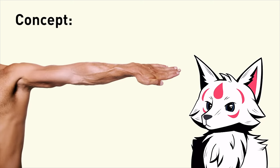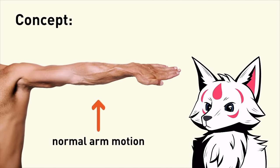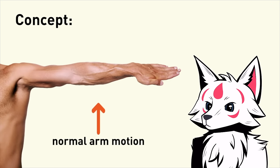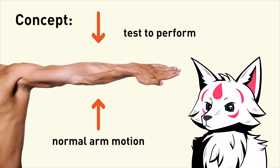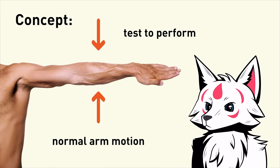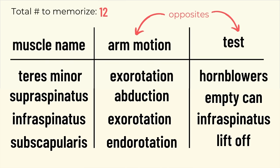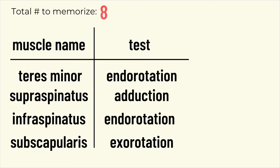But I can chunk things together and reduce the total amount by taking more time to understand the big picture concepts. An important concept here is that if the muscle raises the arm, then an injury to that muscle makes it hard to raise the arm, and the test applies pressure against raising the arm — columns two and three are basically opposites of each other. So if I memorize one column, I know the other, which reduces 12 things down to eight.